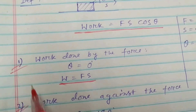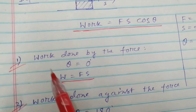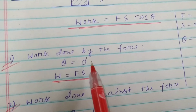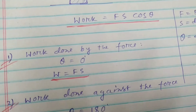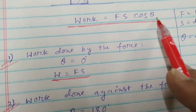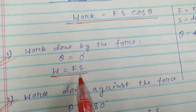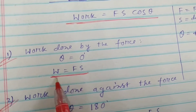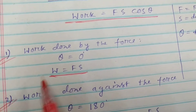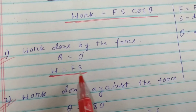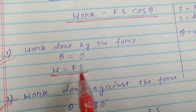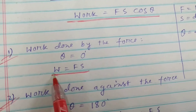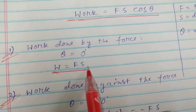Now a few cases occur. First: work done by the force — theta is equal to zero degrees, therefore cos theta is one, and W is equal to Fs. This is called work done by the force, that is, the force and the displacement are in the same direction. The angle between them is zero degrees, so W equals Fs.